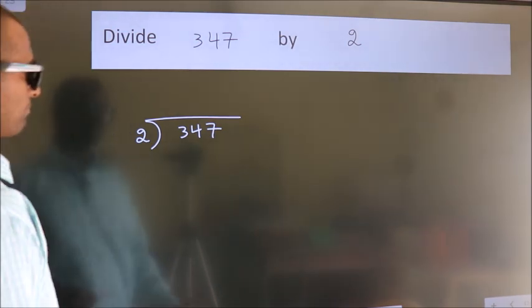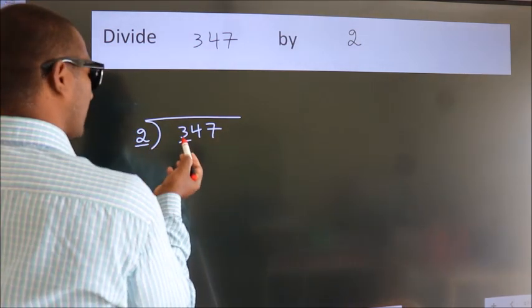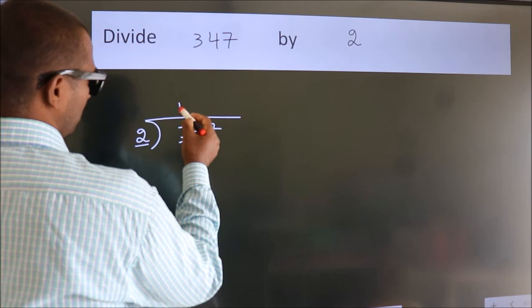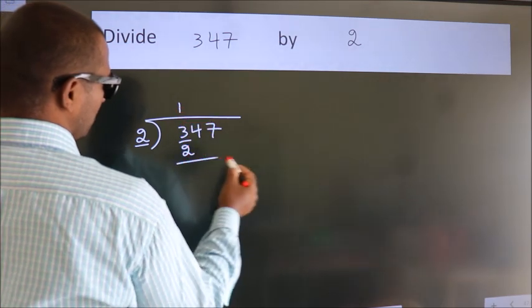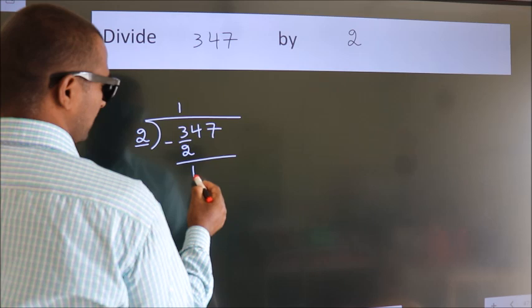Next, here we have 3. Here 2. A number close to 3 in 2 table is 2 1s 2. Now we should subtract. We get 1.